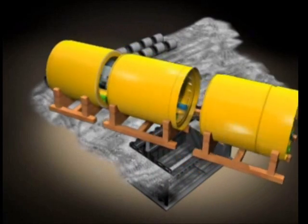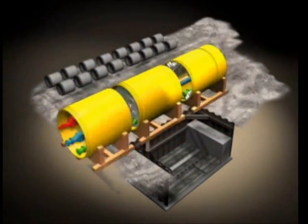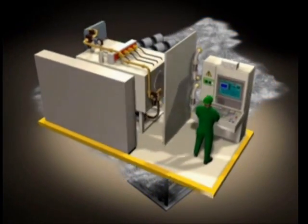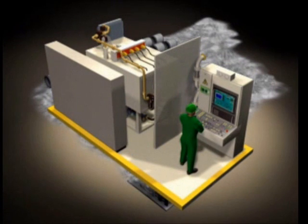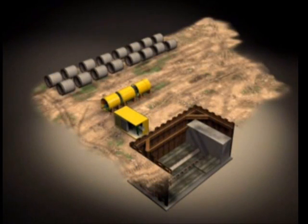The tunneling machine is delivered to the site in separate modules for easy handling. The container with the operator control panel and the hydraulic power pack for the jacking station is located in front of the start shaft such that the machine operator has eye contact with the jacking station.